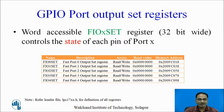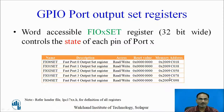Next is the GPIO port output set register. This is again word-accessible and 32-bit wide, controlling the state of each port pin of port X. We have five set registers: FastIO 0 set register to FastIO 4 set register. These are all read-writeable, and these are the memory addresses you can use to access these registers. The reset values are all zeros for all these registers. Refer to the standard header file lpc17xx.h for standard definitions while writing the program.